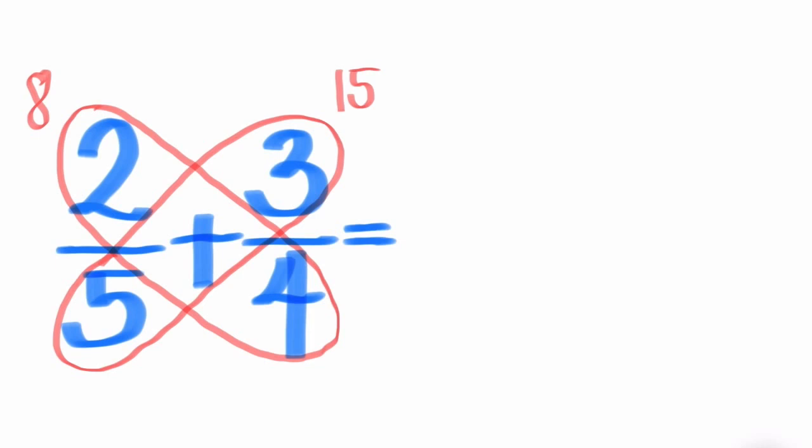Step number three. Add the two products then write the sum as the numerator. Step number four. Multiply the two denominators of the two fractions then write the product as the denominator.